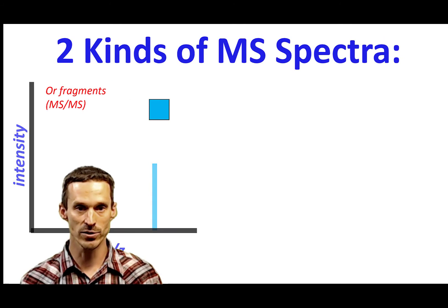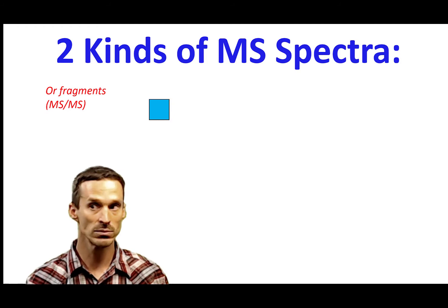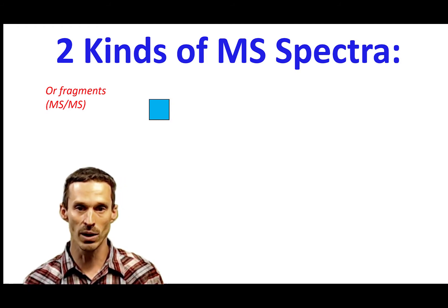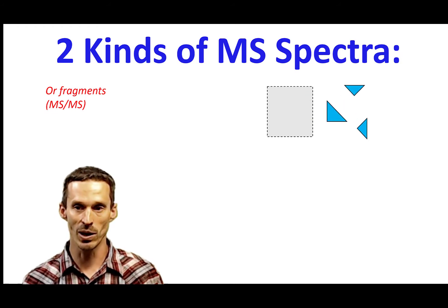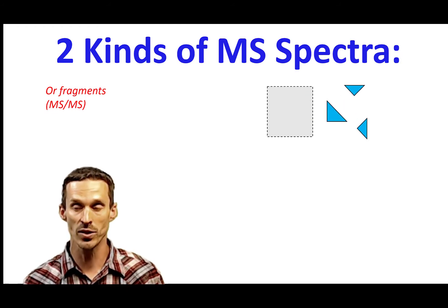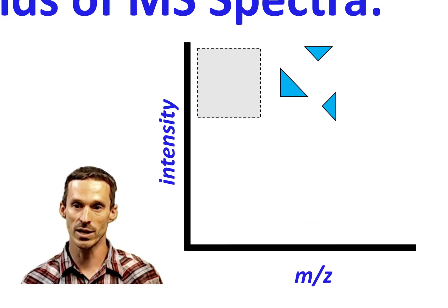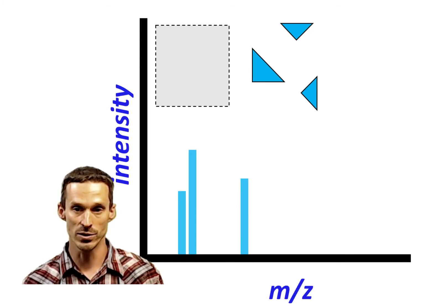Now, the other kind of mass spectrum that we could get would be what we call a fragmentation spectrum, or a tandem MS spectrum, depending. We'll talk about that later. So imagine we only have one single molecule, but I found a way to break it apart. So now we have pieces of the molecule, and in this case, they all add up to the whole. They don't necessarily have to. But if each of these pieces has a charge, then we could record a mass spectrum for them, and they might have different intensities as well.